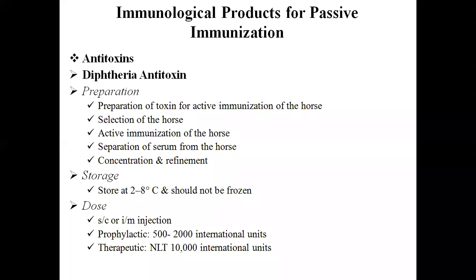This is a D Pharmacy Pharmaceutics One class, subject code 1.1T, Unit 5. In this class we are going to discuss immunological products for passive immunization, particularly antitoxins and diphtheria antitoxin.